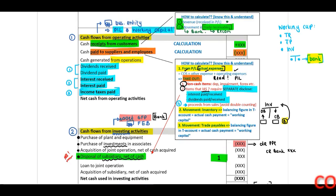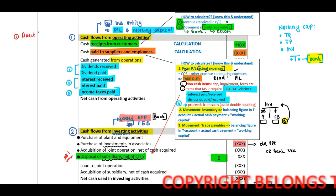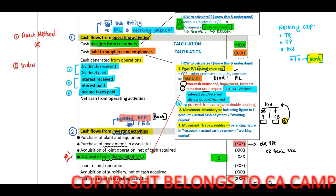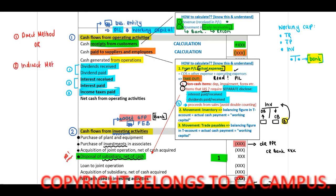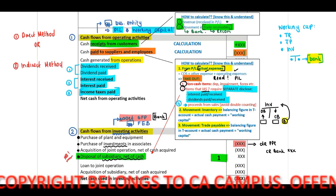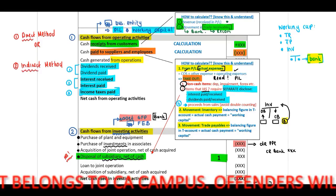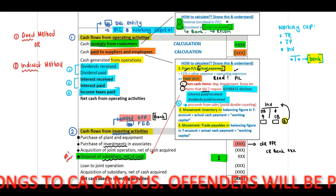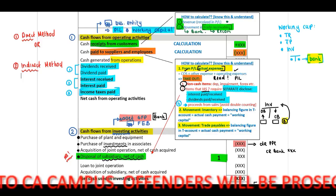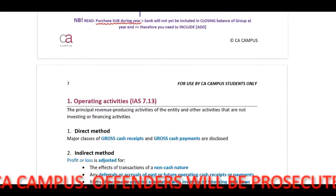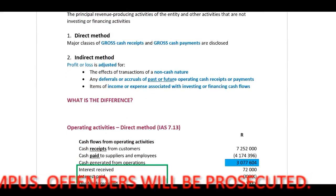When you calculate your cash flows from operating activities, IAS7 indicates that you can use either the direct method or the indirect method. In a scenario, they will indicate which method to use, and if they do not indicate anything, you can use the method that you want.